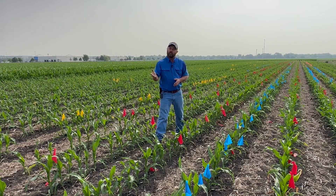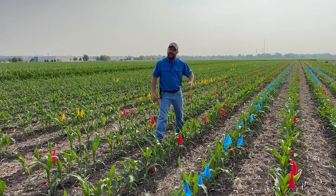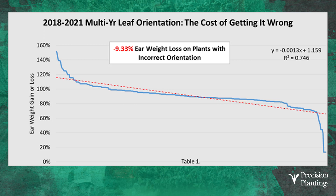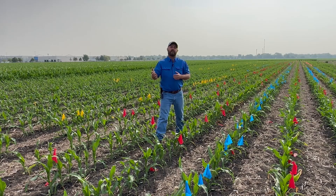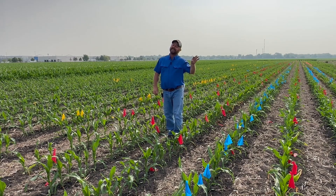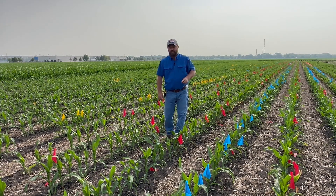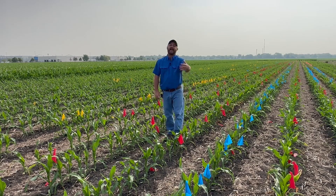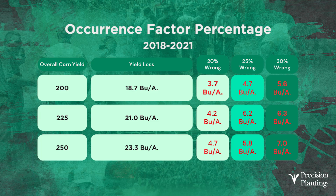Is there any yield loss? What we found over multiple years here at the PTI farm is that when we take an ear at harvest time from a plant with the wrong leaf orientation, on average our ear weights are 9.33% less than a plant that has the right leaf orientation. What does that mean? If we take actual yield — let's say we've got 200-bushel corn — that 9.33% yield loss is about an 18 to 19 bushel yield hit for that plant with the wrong leaf orientation. But it's not happening 100% of the time. Looking at occurrence values in the field, that 18 to 19 bushel yield loss with 20% of our plants wrong would equate to about a 3.7 bushel overall yield loss. 25% wrong would be approaching near five bushel, and 30% wrong is approaching near six bushel per acre.